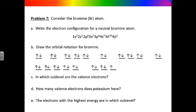The next question asks in which sublevel the valence electrons are located. Find the highest energy level written in the electron configuration. For bromine, valence electrons are located in both the 4s and 4p sublevels. Bromine has seven valence electrons, as indicated by both the superscripts and the orbital notation. The electrons with the highest energy are in the 4p sublevel, which is the last sublevel written in the electron configuration.